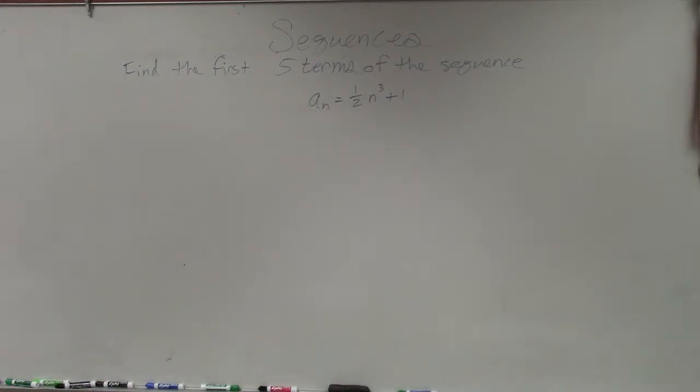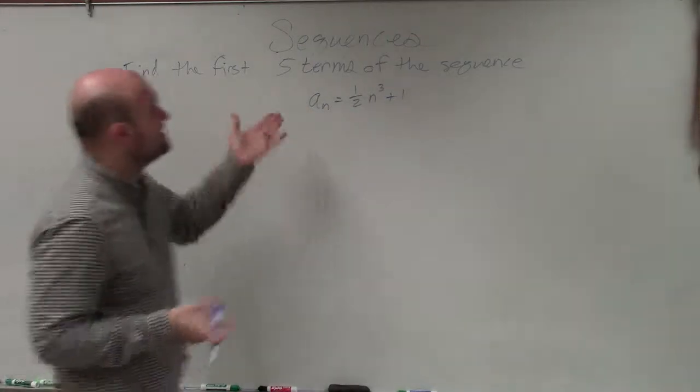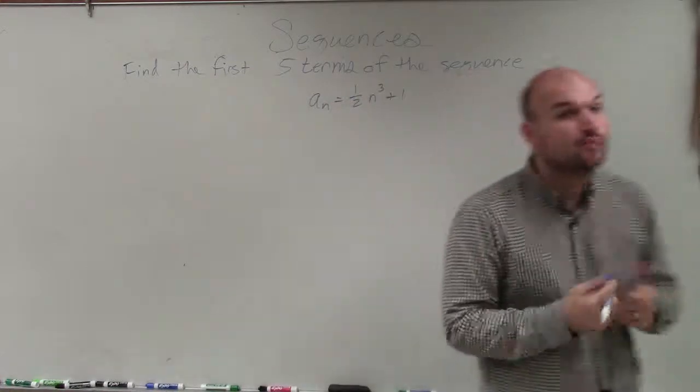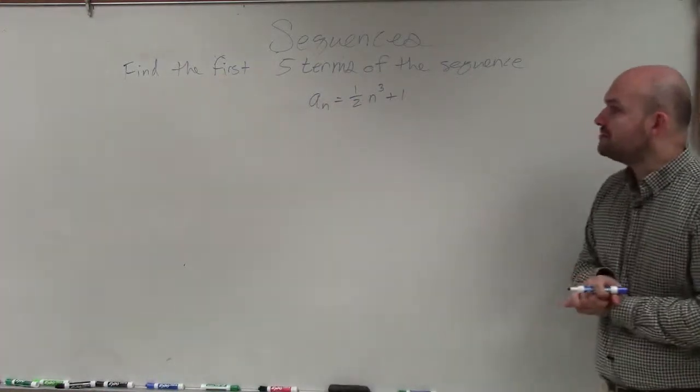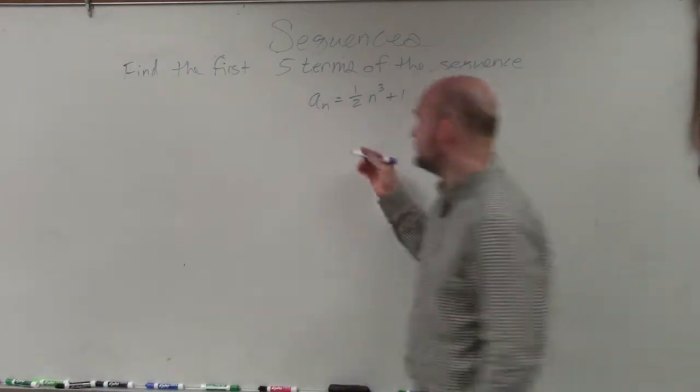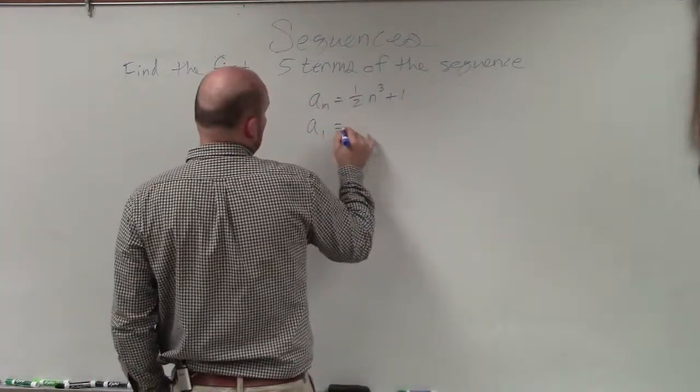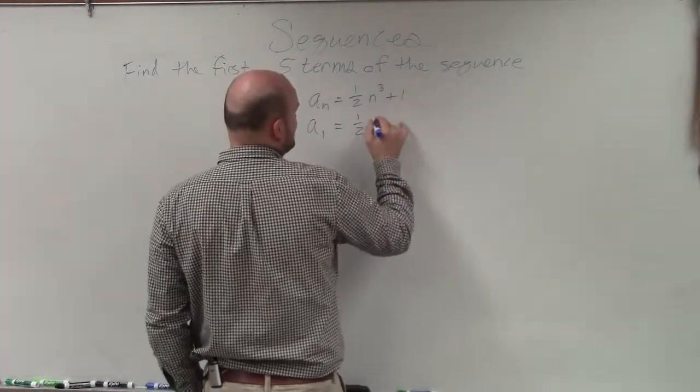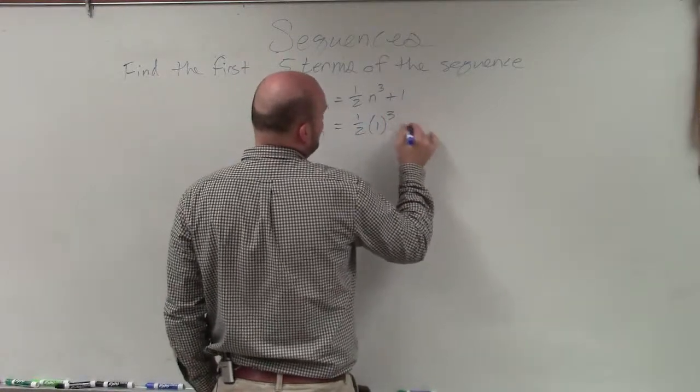So in this example, ladies and gentlemen, it says find the first five terms of the sequence. And here we have a sub n equals 1 half n cubed plus 1. So basically what we need to simply do for this problem is go ahead and do what we did on the last one and just plug in 1, which represents the first term, in for n.